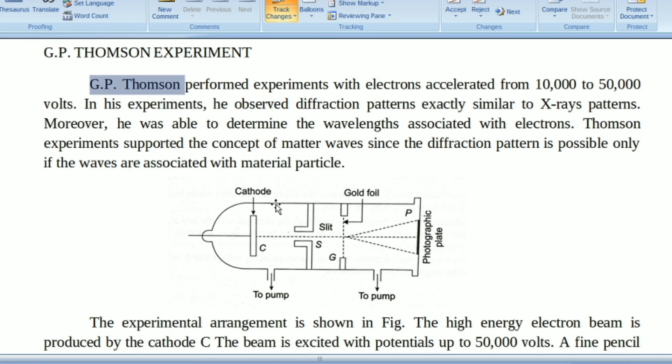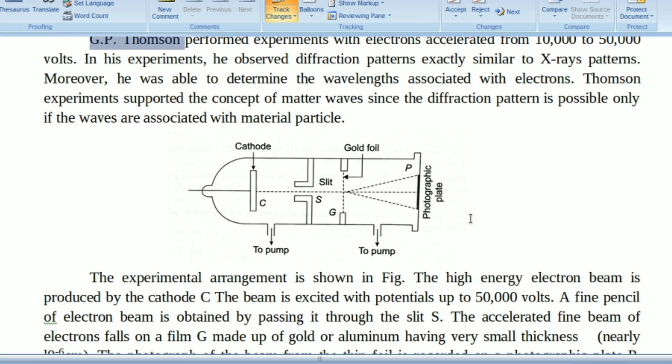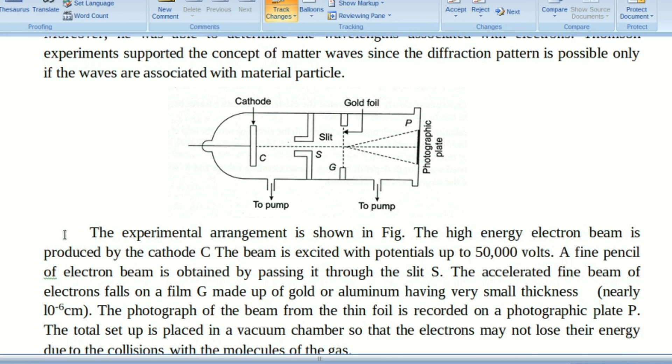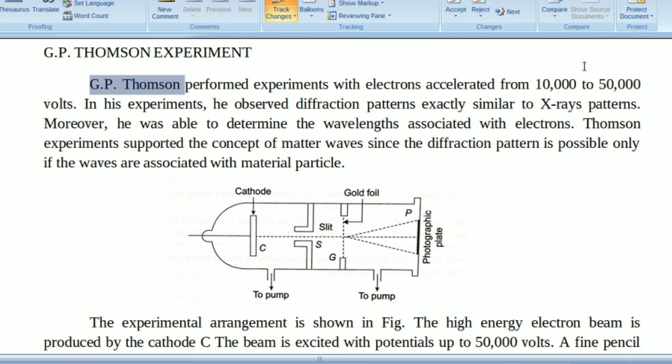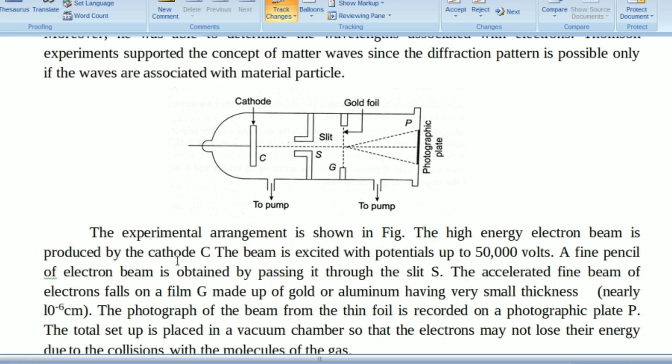For this experiment, the experimental arrangement is shown in the figure. The high energy electron beam is produced at cathode C. The beam is excited with potentials up to 50,000 volts. As already mentioned, 10,000 to 50,000 volts.